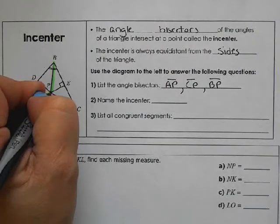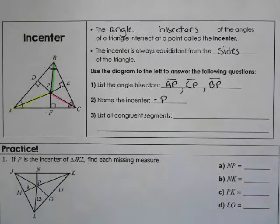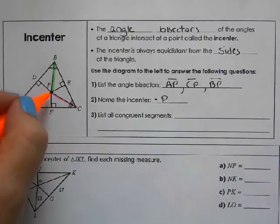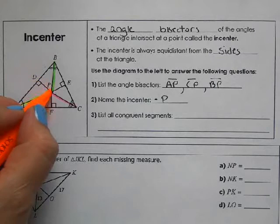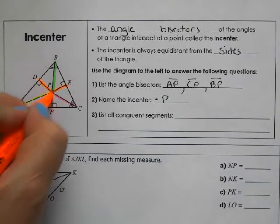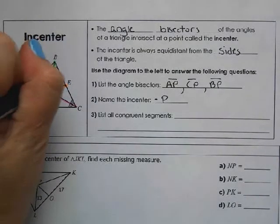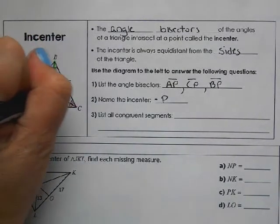And point P is the incenter. The congruent segments are perpendicular from the incenter. So these segments, all in orange, are congruent to each other. So I'm going to mark them with a tick mark.